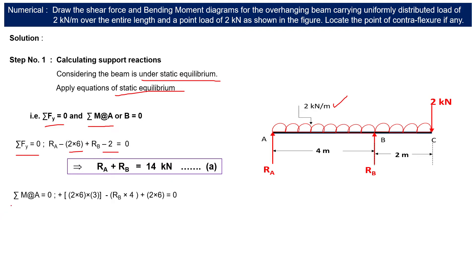Next, we take summation of moments about support A. The total UDL load is 12 kN acting at the midpoint, that is 3 meters from A. Sign convention: clockwise moment is positive, anti-clockwise is negative. The UDL creates a clockwise moment about A, so we multiply 12 by 3.